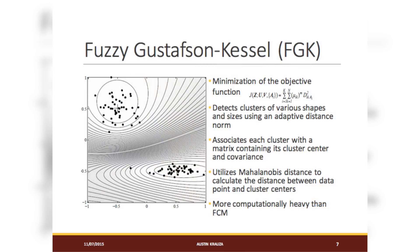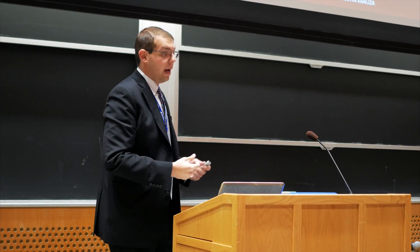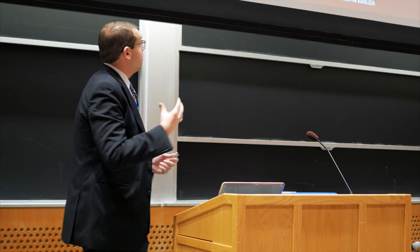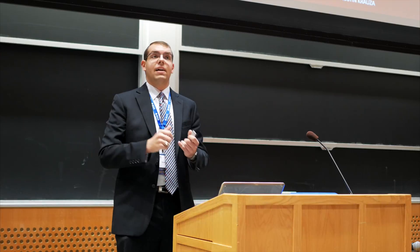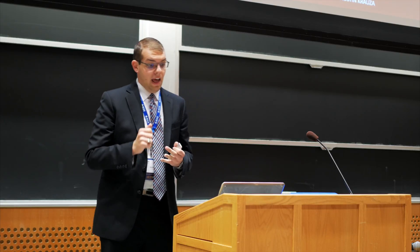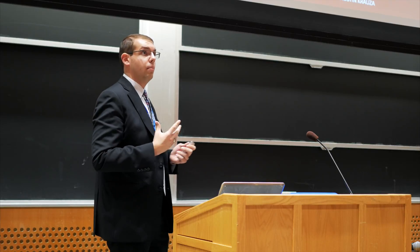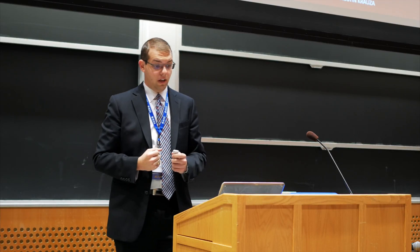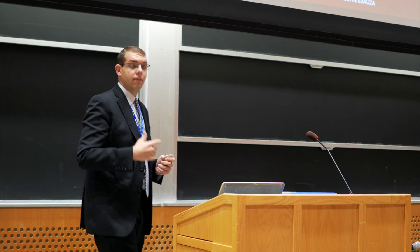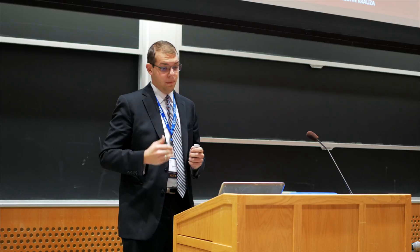We then have the Gustafson-Kessel method, which is a minimization of the derivative of that same FCM function. It detects clusters of various different shapes and sizes using adaptive distance norms, and associates each cluster with a matrix containing its cluster center and covariance. It's more computationally heavy than fuzzy C-means because it uses matrices and Mahalanobis distance. It accounts for different variances moving in different directions, and the covariance of how the different variables are moving relative to each other — if variables show positive behavior the covariance is positive; opposite relationships give negative covariance.